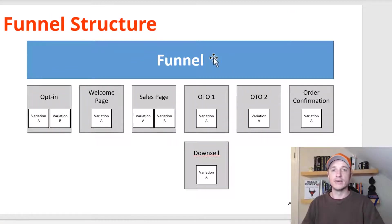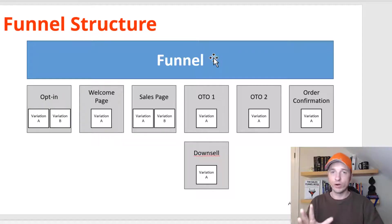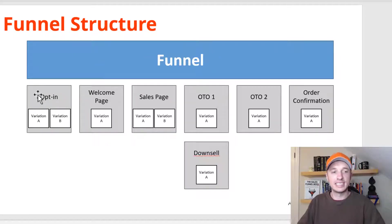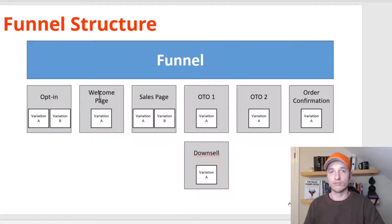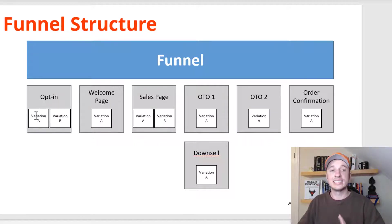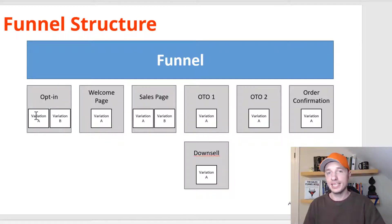You have a funnel level which encompasses your entire funnel — there are settings there you can adjust, and you can set a page path for your funnel. Within your funnel you have different steps, such as an opt-in page, a welcome page, a sales page, etc. Each step has a page path you can direct people to. And within each step you have different variations, and each variation also has its own unique page path.